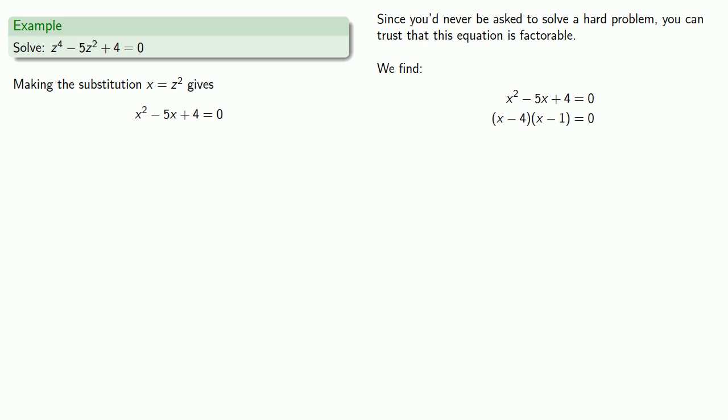And since we have product equal to 0, we know that one of the factors must be 0. So either x minus 4 is equal to 0, or x minus 1 is equal to 0. Solving these equations give us our two solutions.